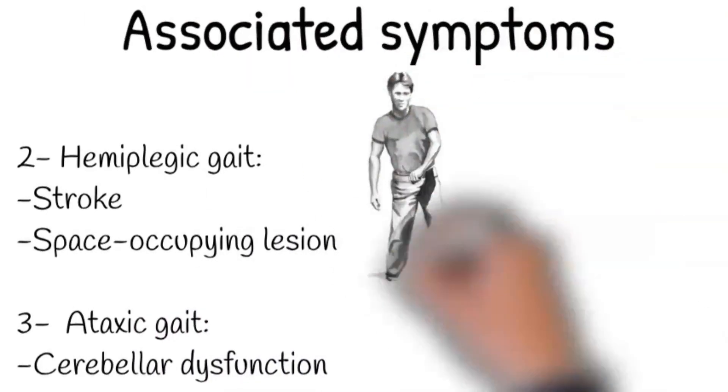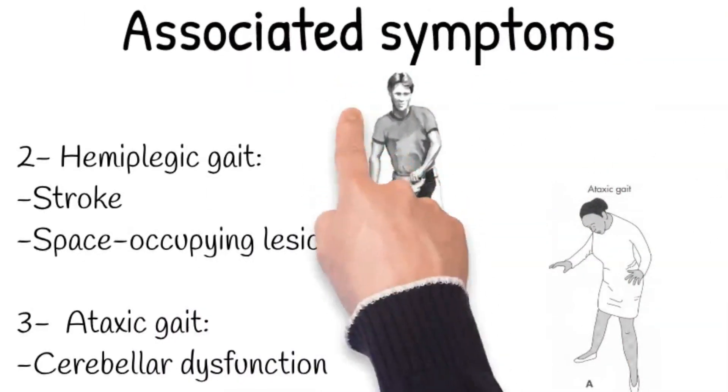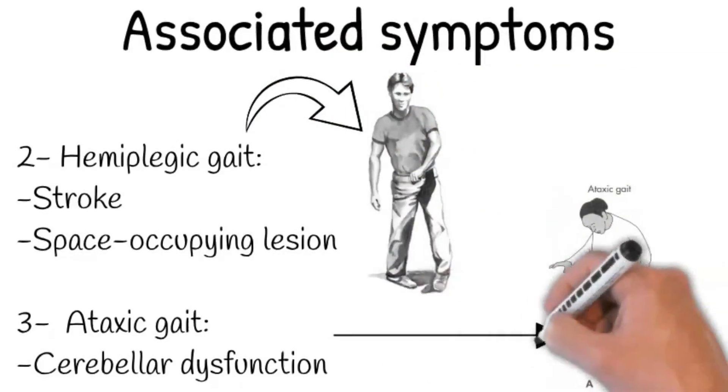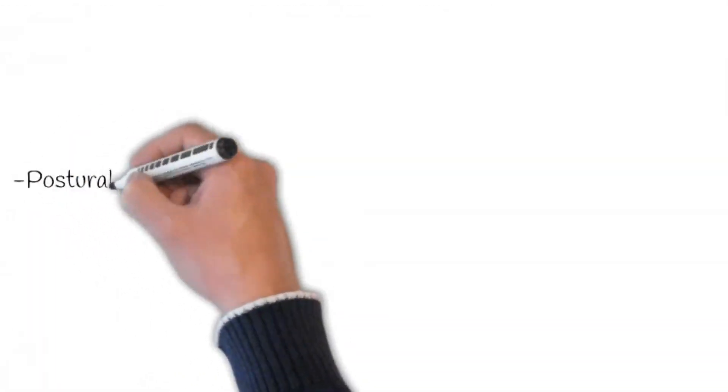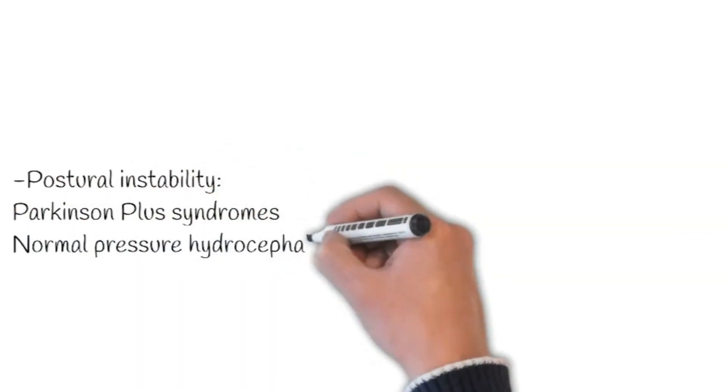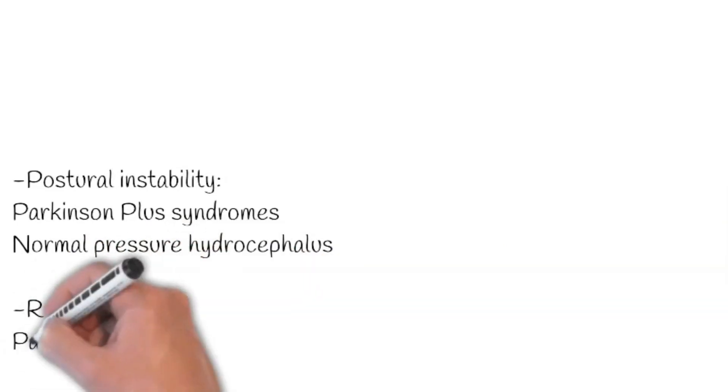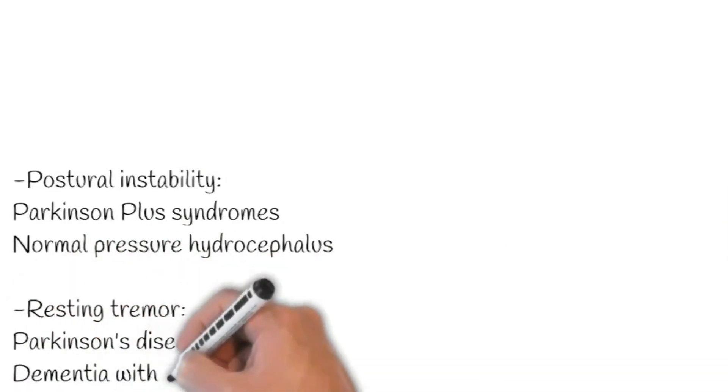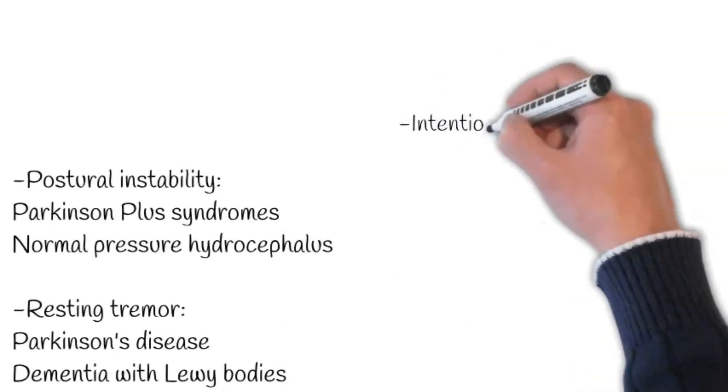However, unsteady ataxic gait due to cerebellar dysfunction may be seen in alcohol-related dementia. Next, inquire about postural instability and falls as a feature of Parkinson's disease, Parkinson Plus syndromes, and normal pressure hydrocephalus. Moreover, a pattern of movement disorder may provide an important clue here.